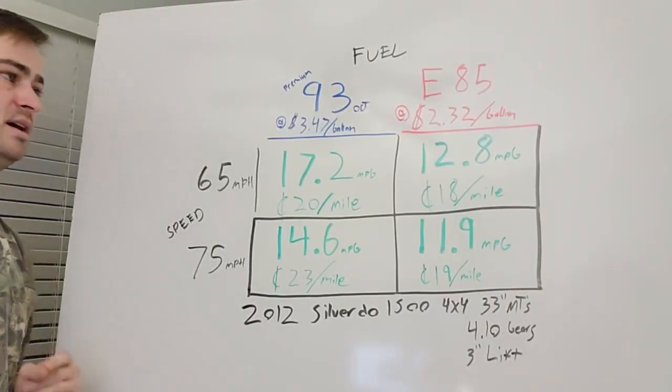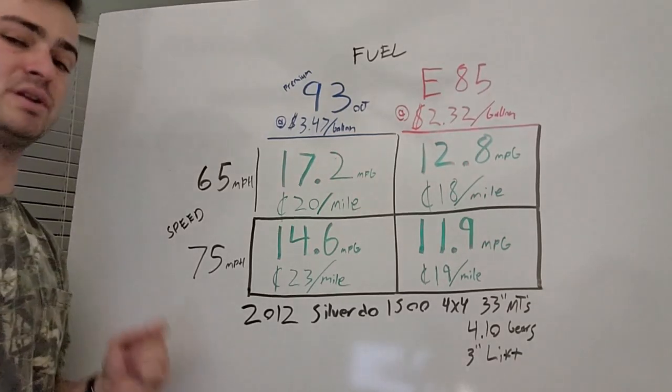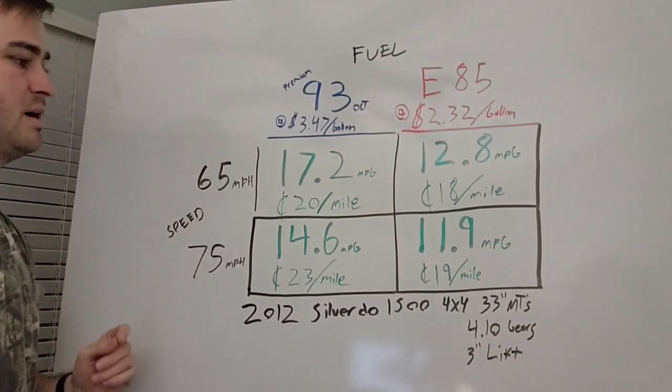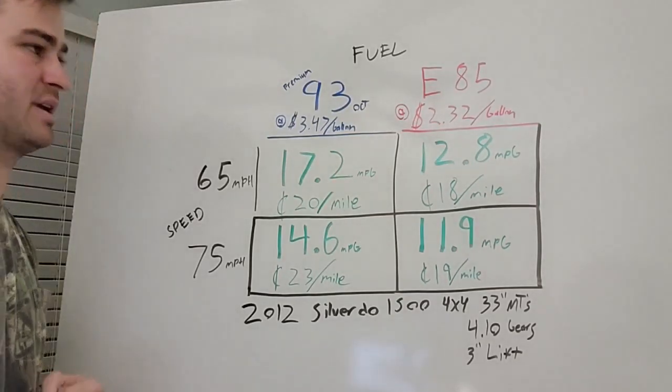Anyway, here are the results with 93 octane fuel coming out to 17.2 miles per gallon at 65 miles per hour and at 75 miles per hour I got 14.6 miles per gallon.